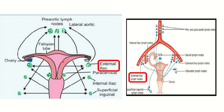From the body of the uterus, the lymphatics initially drain into the external iliac lymph nodes. Then for the lower part — the cervix — the drainage is into the para-cervical lymph nodes. So in summary: fundus drains to para-aortic lymph nodes, body drains to external iliac lymph nodes, and cervix drains to para-cervical lymph nodes.